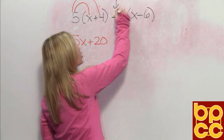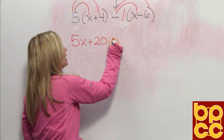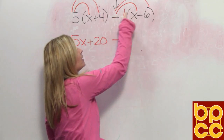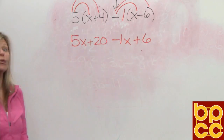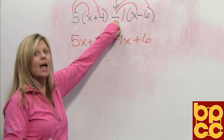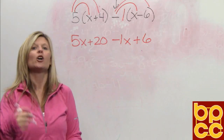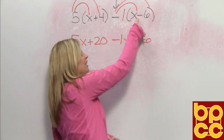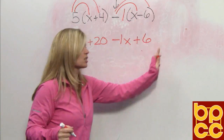So we're going to distribute a negative 1. A negative times a positive is a negative, so negative 1 times x is negative 1x. Negative 1 times negative 6 — a negative times a negative is a positive 6. What you've got to remember is when you see subtraction, you're really distributing a negative 1. And when you distribute a negative 1, everything behind it changes signs. You've made your additive inverse. The opposite of x is negative x, and the opposite of negative 6 is positive 6.